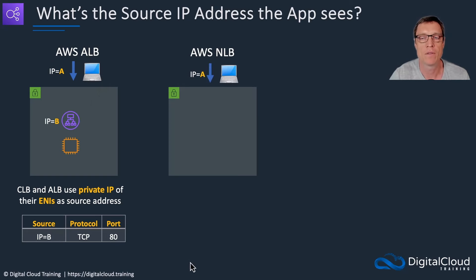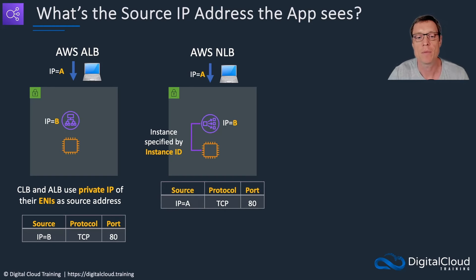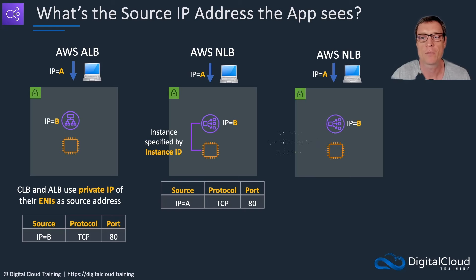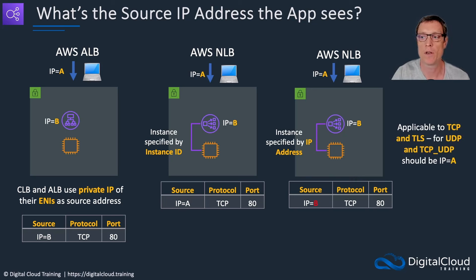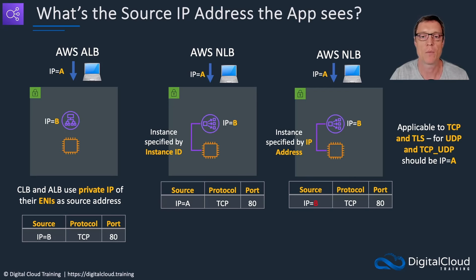With an NLB, again the client IP is A and the load balancer node IP is B. If the instance is specified by instance ID when added to the target group, then the IP address seen by the application is A — the actual client's IP address — which is useful for logging or security purposes. However, if the instance is specified by IP address instead of instance ID, then the IP address seen by the application is B — the load balancer node's IP. This behavior applies when using TCP and TLS. If you're using UDP or TCP_UDP, then the IP address seen is always A. There is a link to the AWS documentation where you can read more about this.